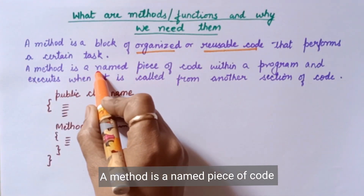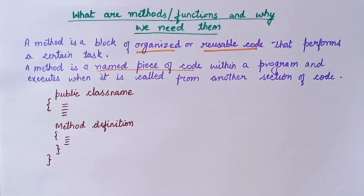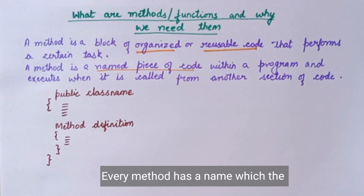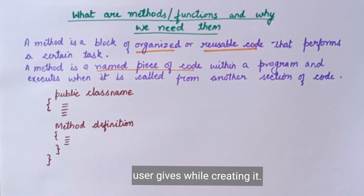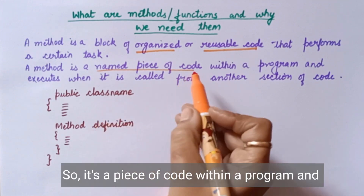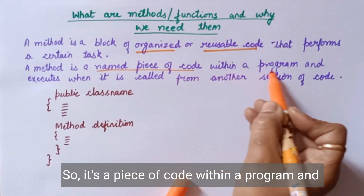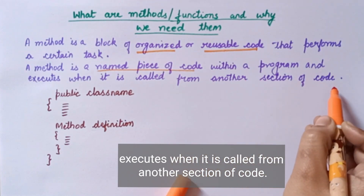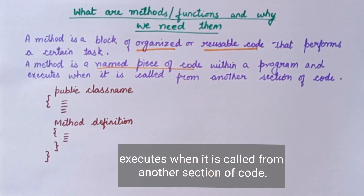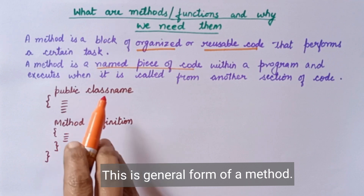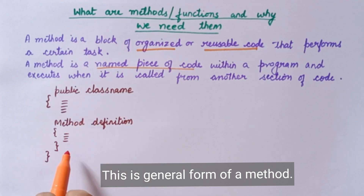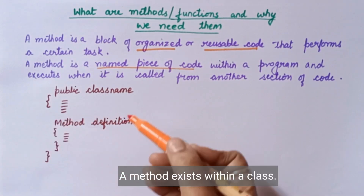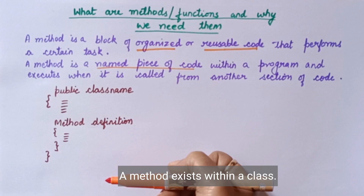A method is a named piece of code. Named piece of code means if you are making a method, the programmer or user will give it a name. Every method has a name. It is a named piece of code within a program, and it executes when it is called from another section of code. The method exists within a class — it is a general method.